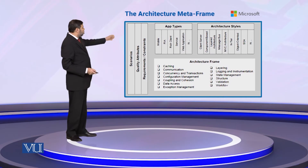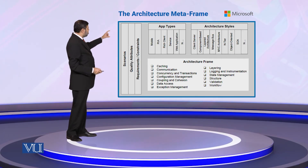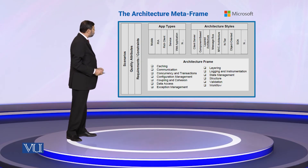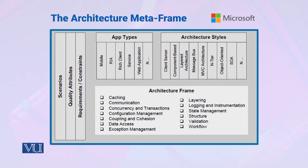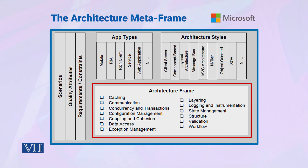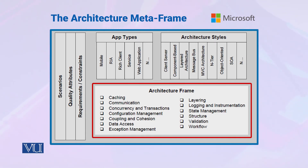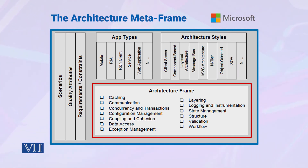Finally, the bottom of the box is the architecture frame. The architecture frame is a collection of hot spots which you can use to analyze your application architecture. Hot spots include things like security, layering, and so forth. There may be many different hot spots that will be significant and relevant to you.